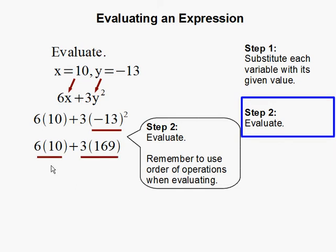Then we do our multiplication or division before we do our addition or subtraction. So 6 times 10 gets us 60, and 3 times 169 gets us 507, and finally our last operation is to add 60 with 507.